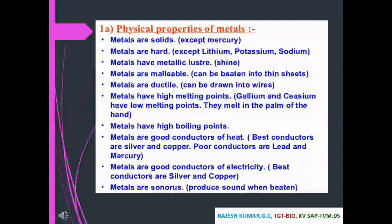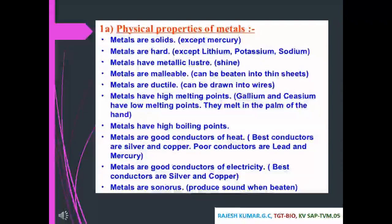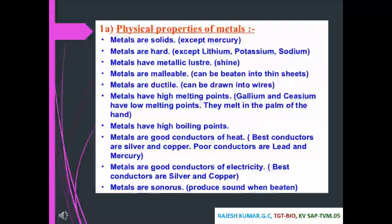Metals have high melting points; gallium and cesium have low melting points and melt in the palm of the hand. Metals have high boiling points. Metals are good conductors of heat; the best conductors are silver and copper, while poor conductors include lead and mercury. Metals are good conductors of electricity; the best conductor is silver, also copper. Metals are sonorous — they produce sound when beaten.